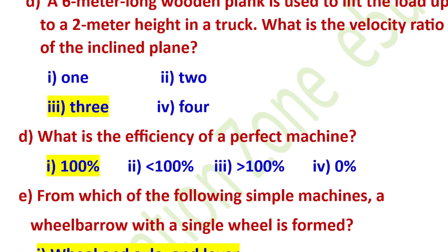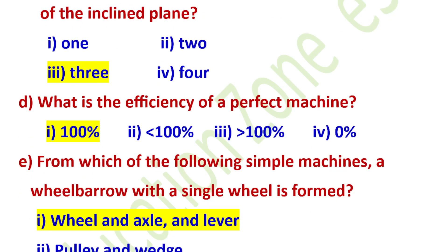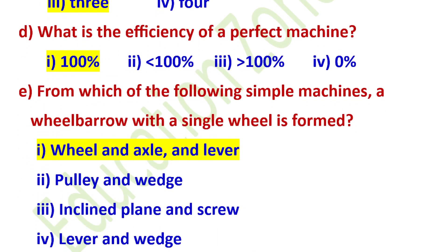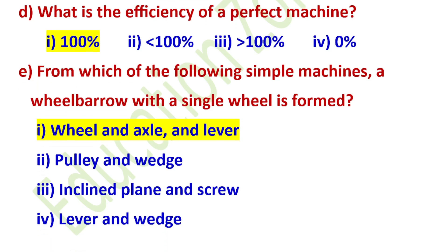A 3-meter long wooden plank is used to lift a 3-meter height — answer D. What is the efficiency of a perfect machine? Answer D. From which of the following simple machines is a wheelbarrow with a single wheel formed? The right answer is D — option A: wheel and axle and lever.